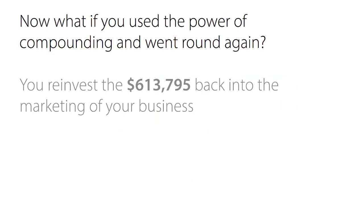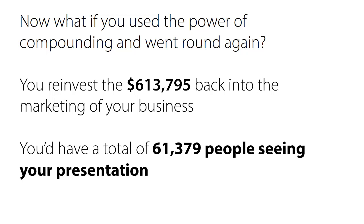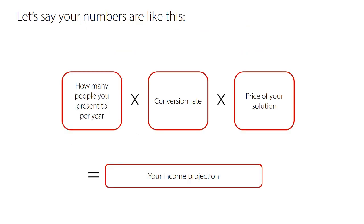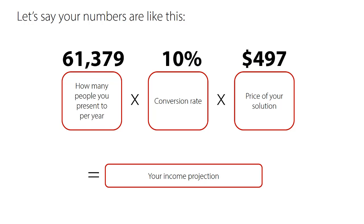What if you use the power of compounding once more and go around again? You would reinvest — now your advertising budget is $613,795. Can you imagine spending that much money? You probably never thought you would. But if you did, you know the math works and you can easily spend that money. You'd have a total of 61,379 people seeing your presentation. Here's how it pans out: conversion rate and price of your solution stay the same, and now the income is just over three million dollars.